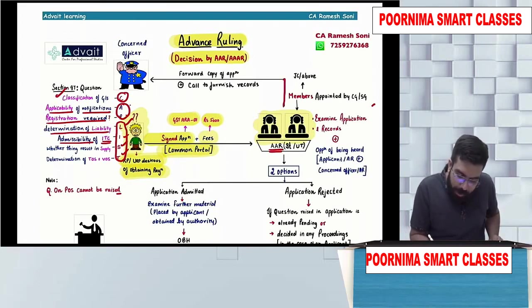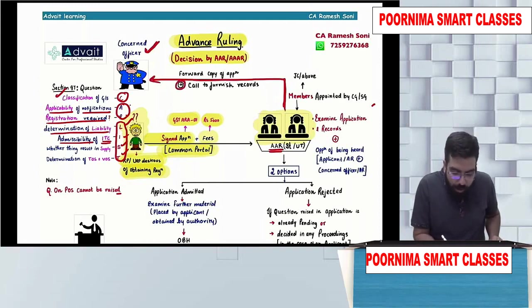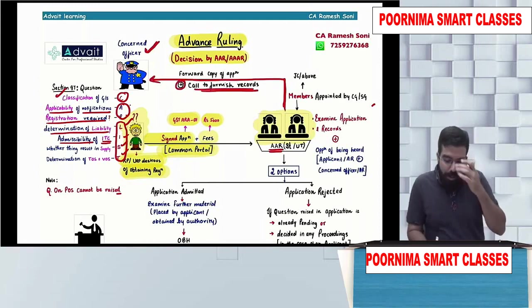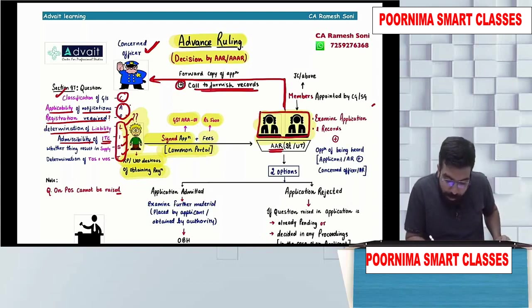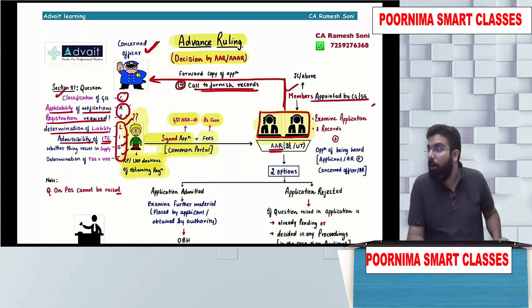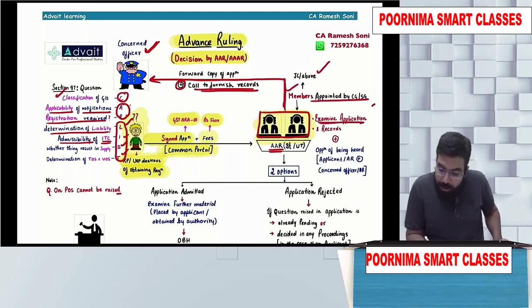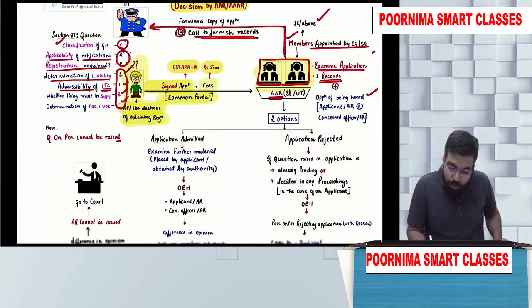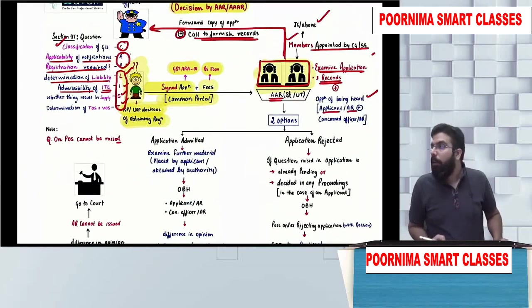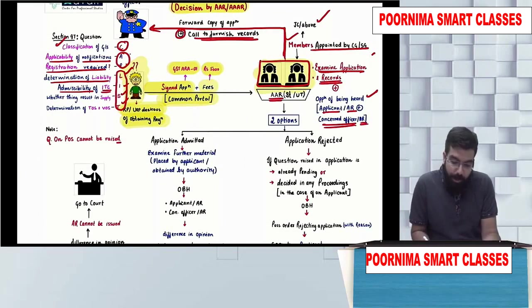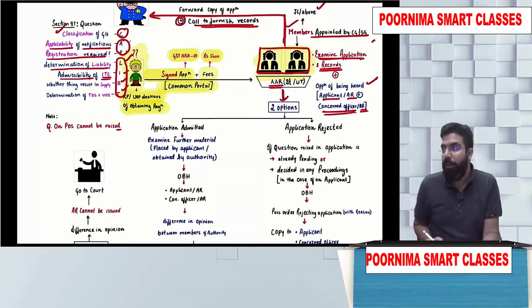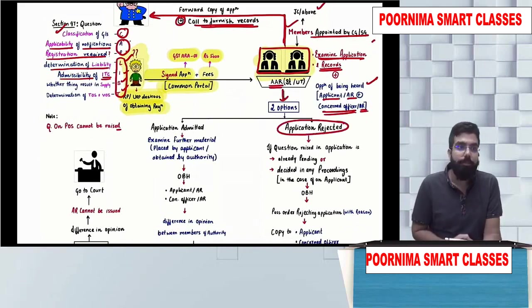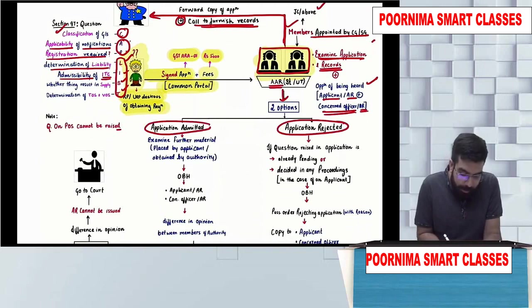The authority will go ahead and forward the application to the concerned officer and call for information or records. The members of AAR are appointed by the central government or state government and are Joint Commissioner rank or above. They will examine the application plus record, give opportunity of being heard to the applicant or his authorized representative plus concerned officer, and then they have two options: either to reject the application or admit the application.